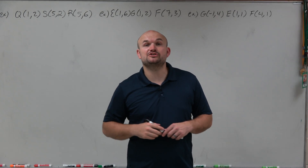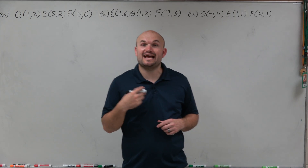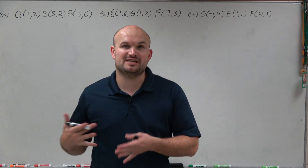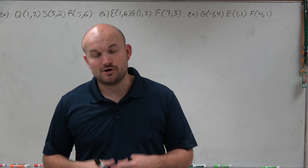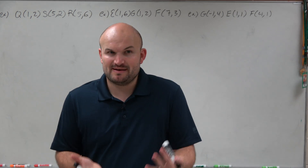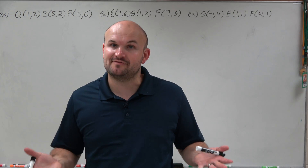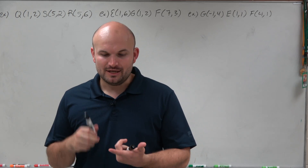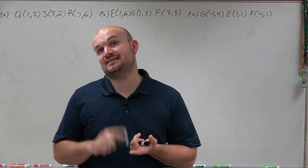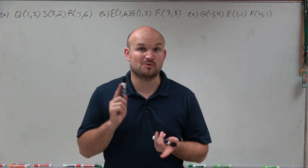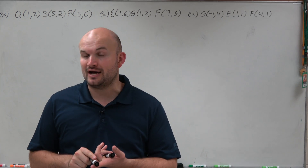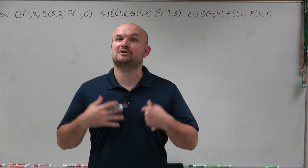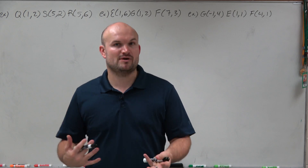Welcome, ladies and gentlemen. What I'd like to do is show you how to find the area as well as the perimeter of a triangle when just given three points. When we're given three points, we first need to graph so we can see what type of triangle we have. Then we need to identify the length of the base and the height to find the area, and the length of every single side to find the perimeter.